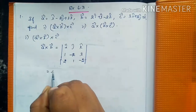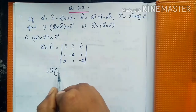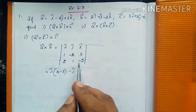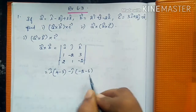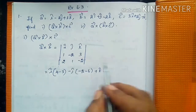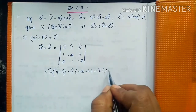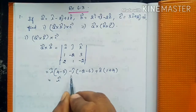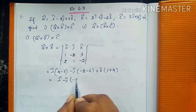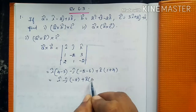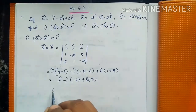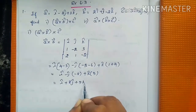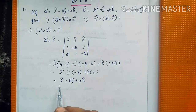Expanding the determinant: î into (4 - 3), minus ĵ into (-2 - 6), plus k̂ into (1 + 4). This gives î(-2-6 = minus ĵ(−8), plus k̂(5). So A×B = î + 8ĵ + 5k̂.